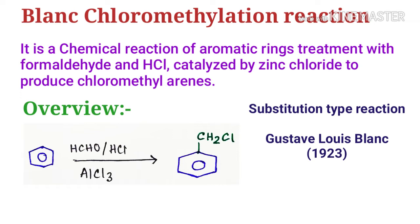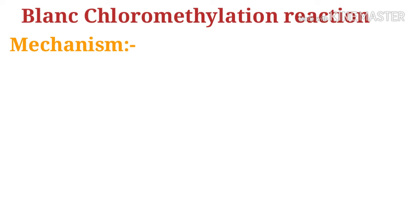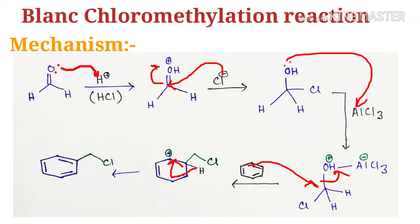Now, what is the mechanism of this reaction? The mechanism is actually quite simple. The reaction is carried out under acidic conditions with a Lewis acid catalyst — aluminum trichloride. In the presence of these conditions, the formaldehyde gets protonated to give a much more electrophilic carbon center. The aldehyde is then attacked by the chloride ion, and finally a water molecule is removed to give an electrophilic ionic species.